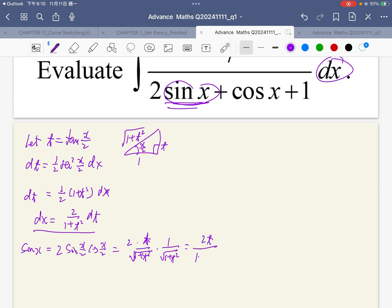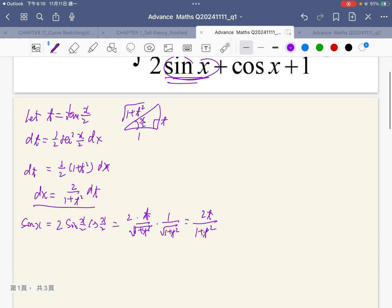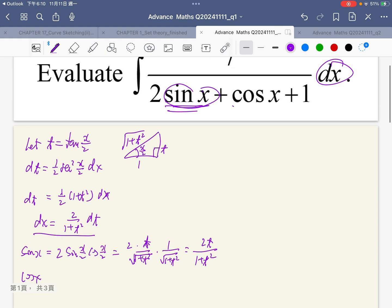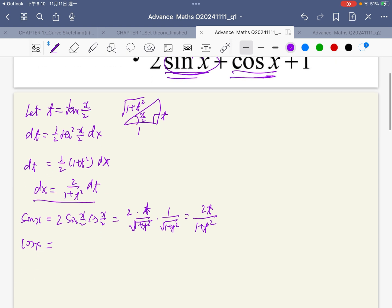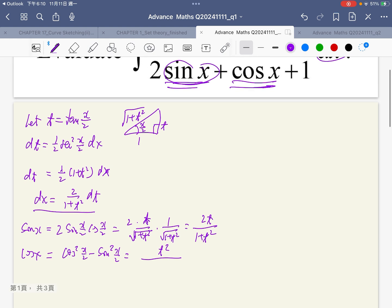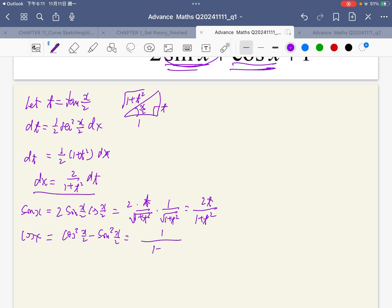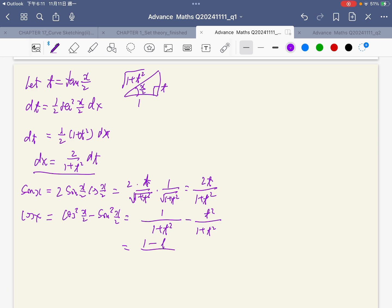That is 2t over 1 plus t squared. And cos x is 1 over 1 plus t squared.